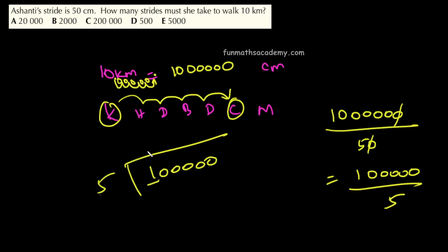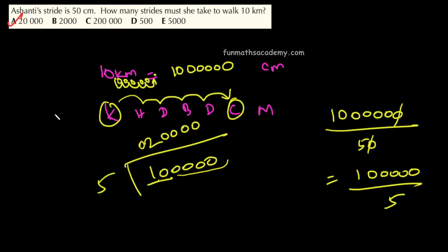How many times does it go? That is 20,000 times. So, the answer is 20,000. Answer A is the correct answer. Thank you for watching.